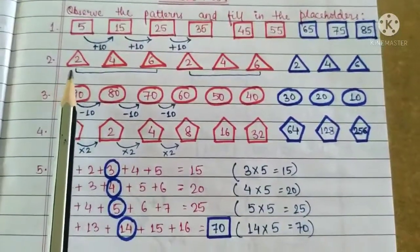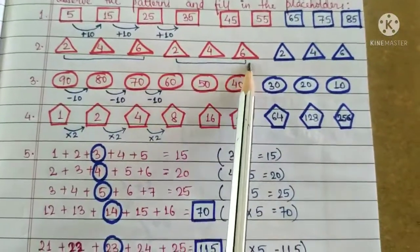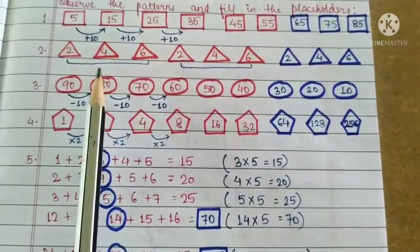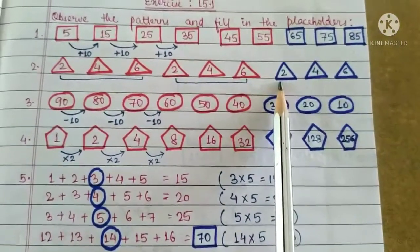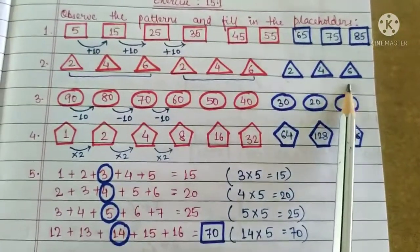Question 2: 2, 4, 6, 2, 4, 6. This is a very easy pattern children. The first 3 numbers have been repeated in the same order. So the placeholders will have 2, 4, 6 again.